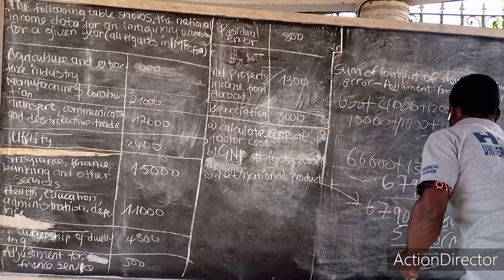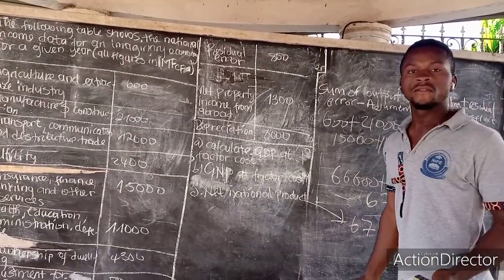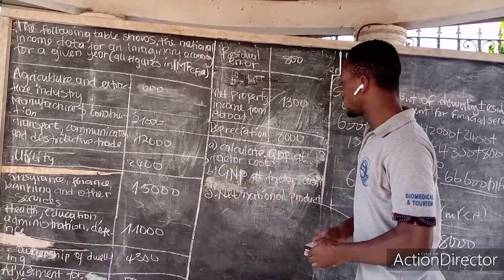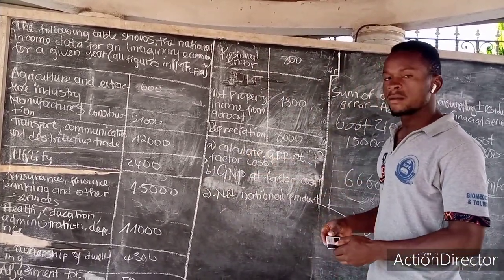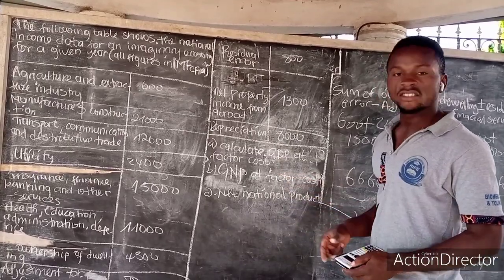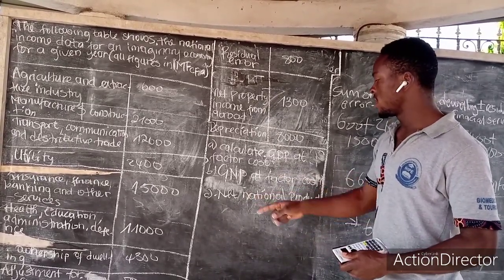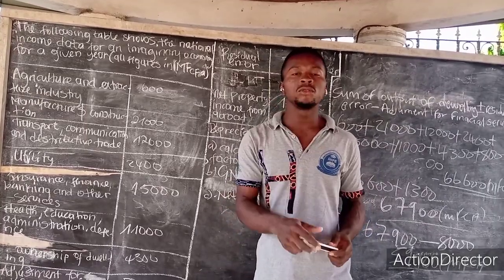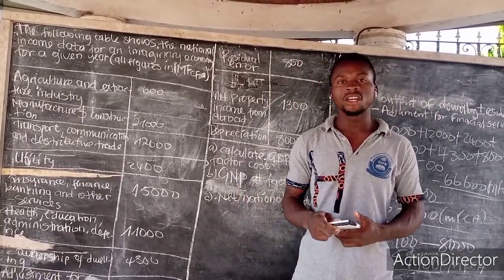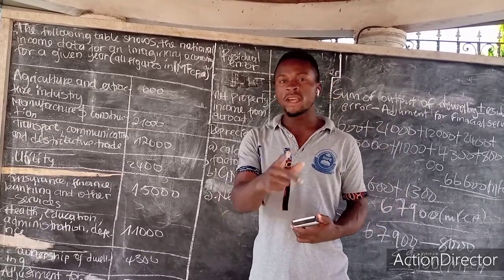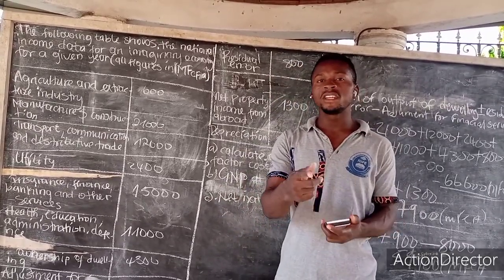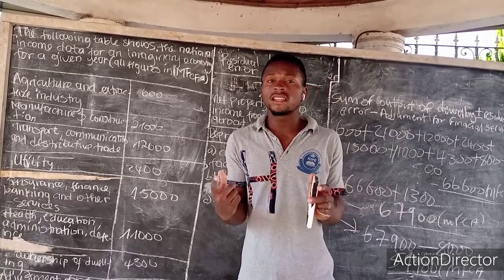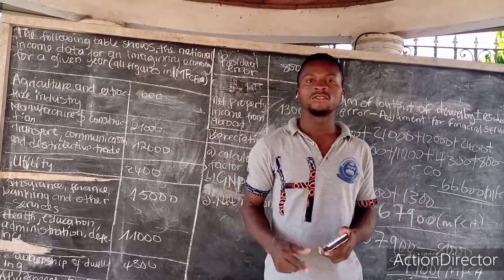Thank you very much for watching this video on Benjamin Academies. Today we explained how to calculate the gross domestic product at factor cost, the gross national product at factor cost, and the net national income. We're hoping to see you in our next video. Do not forget to like, comment, and subscribe to get notifications each time there is a new video. Bye-bye.